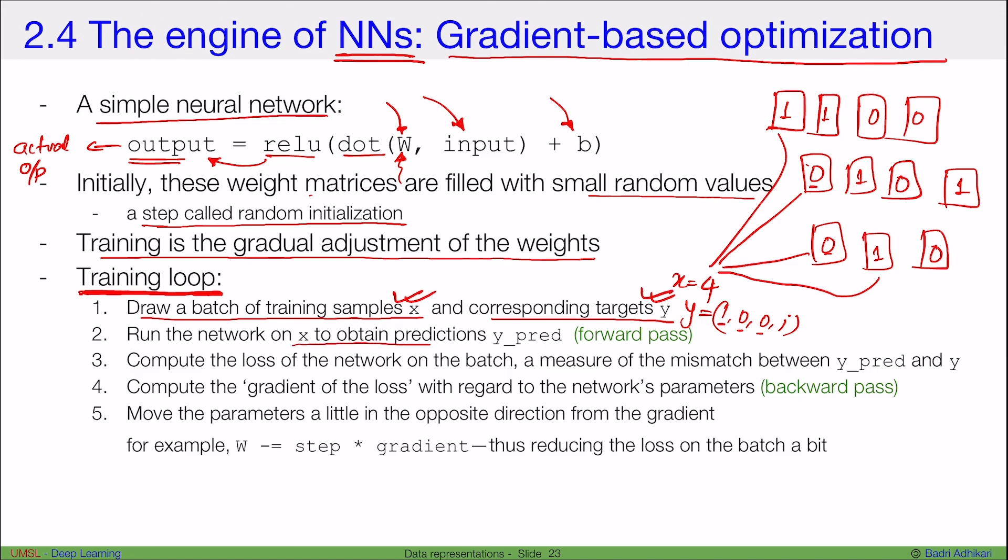Run the network on x to obtain predictions y_pred, this is forward pass. So what I'm going to do is this x is my input data, I'm going to send it to the model, perform this, and obtain my output, so this output is y_pred.